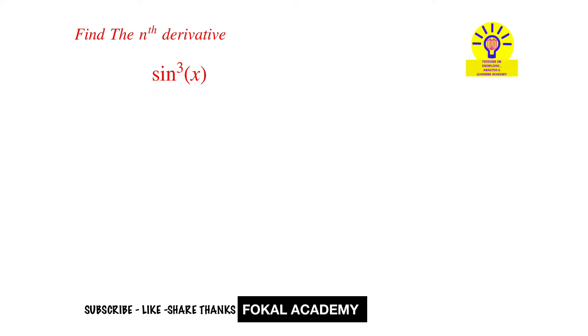That sin 3θ equals 3 sin θ minus 4 sin cube θ. So from this we get 4 sin cube θ equals 3 sin θ minus sin 3θ. So from this, sin cube θ equals 1 by 4th of 3 sin θ minus sin 3θ.